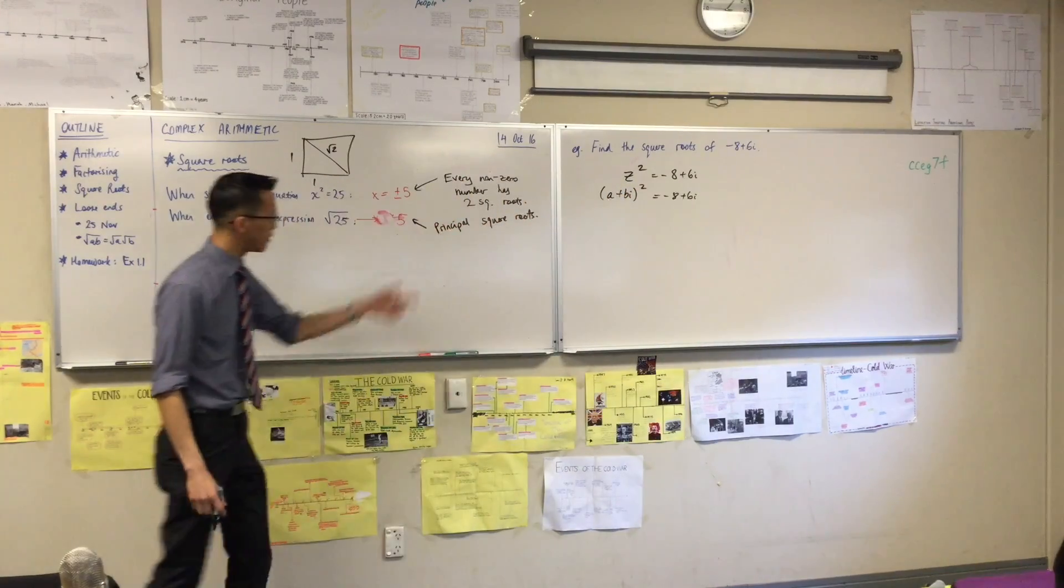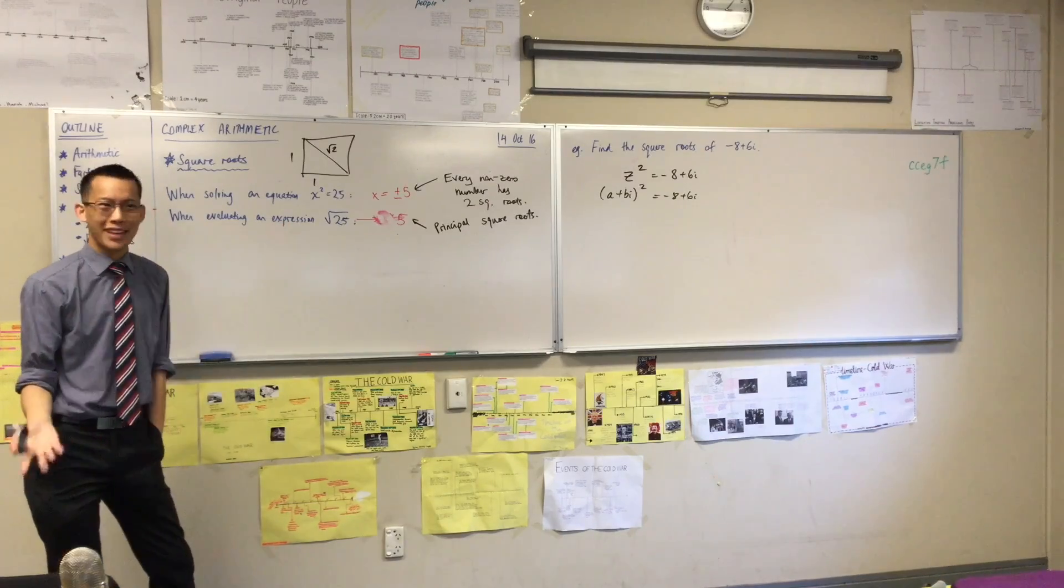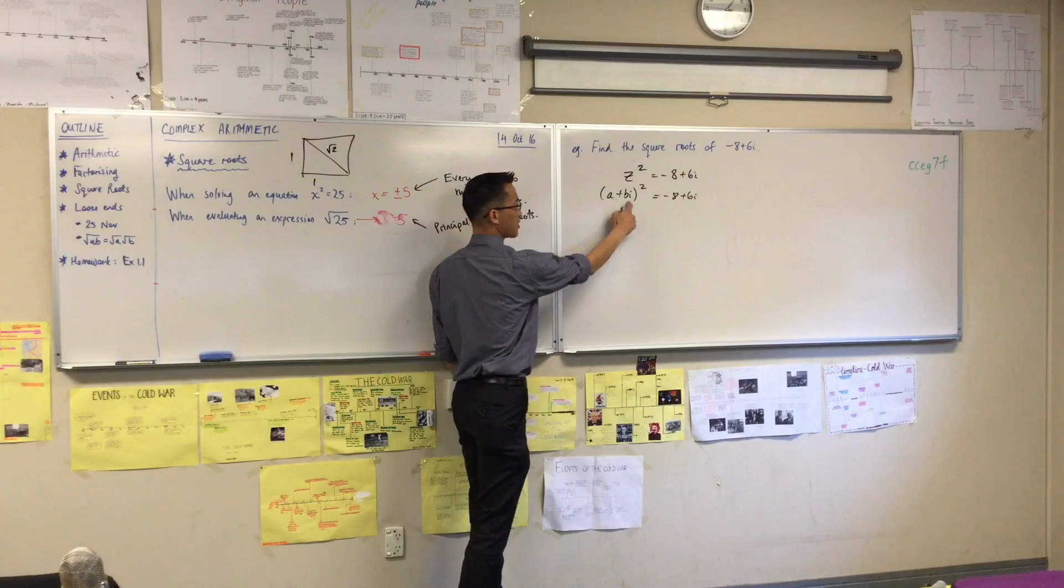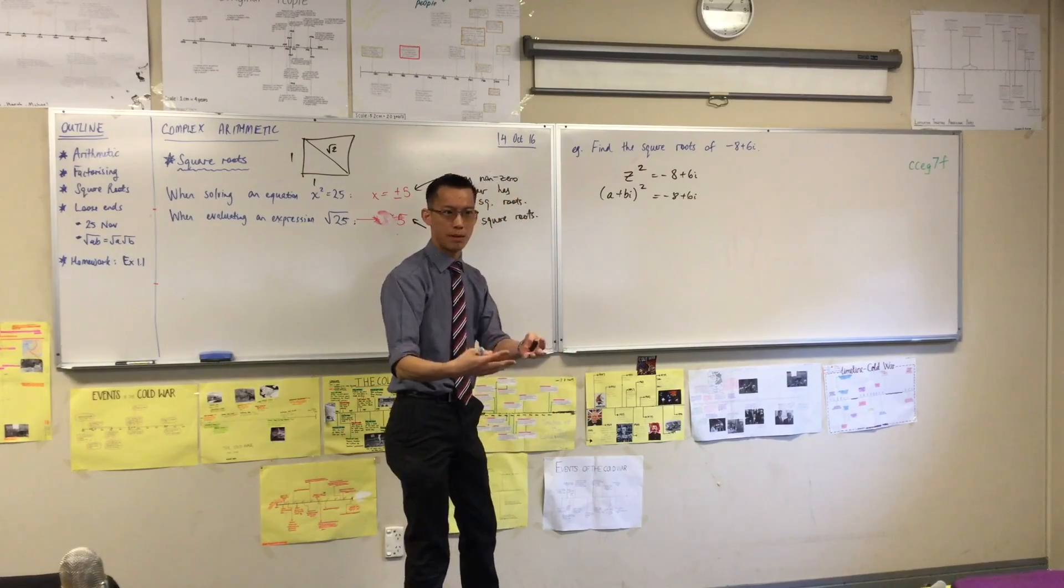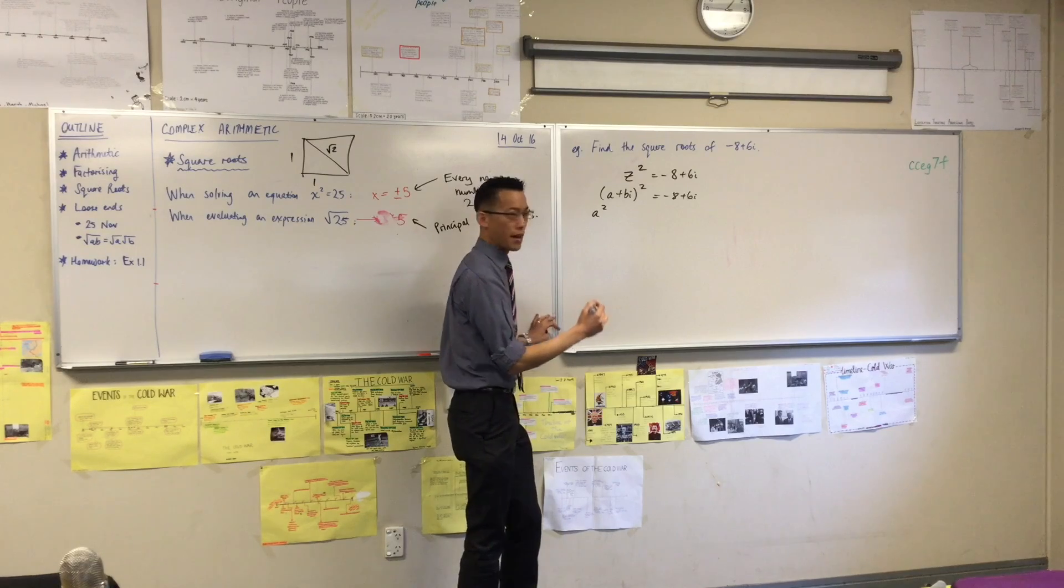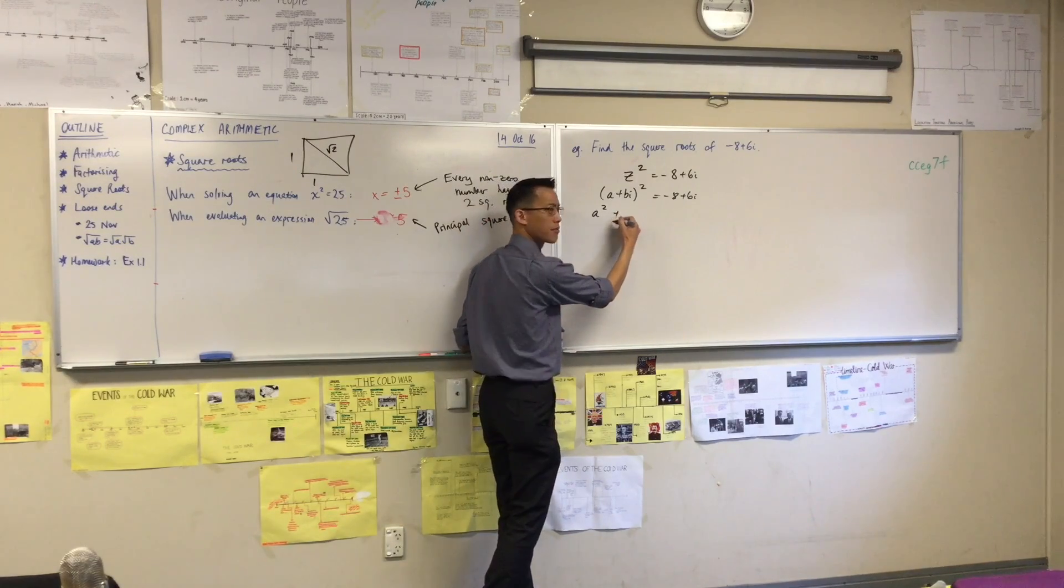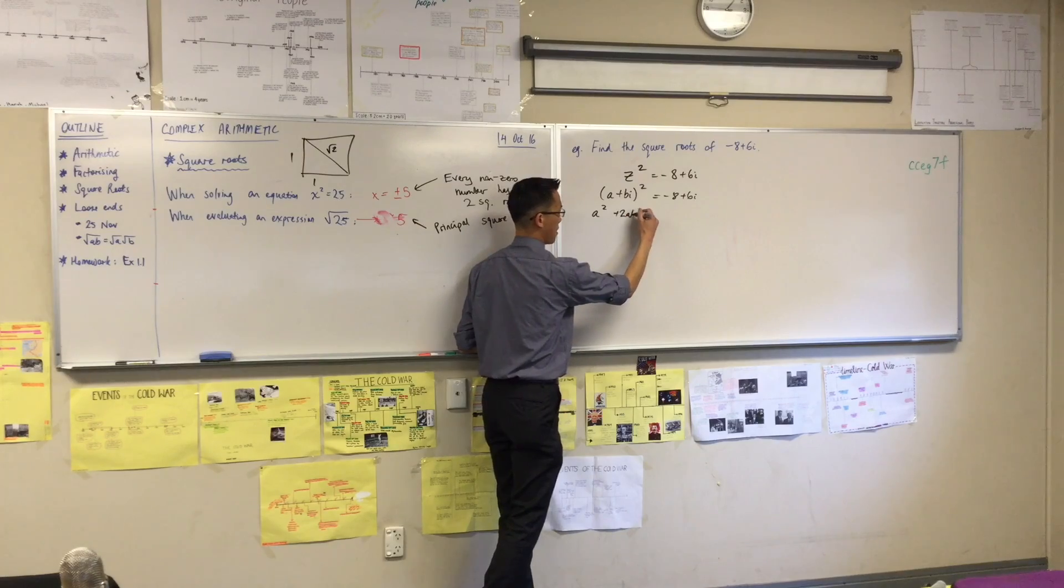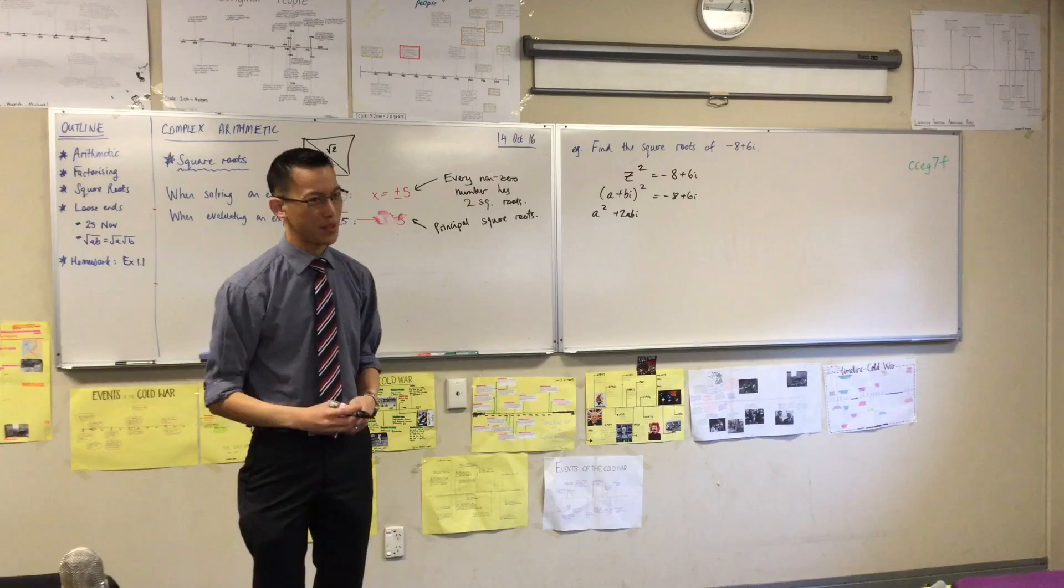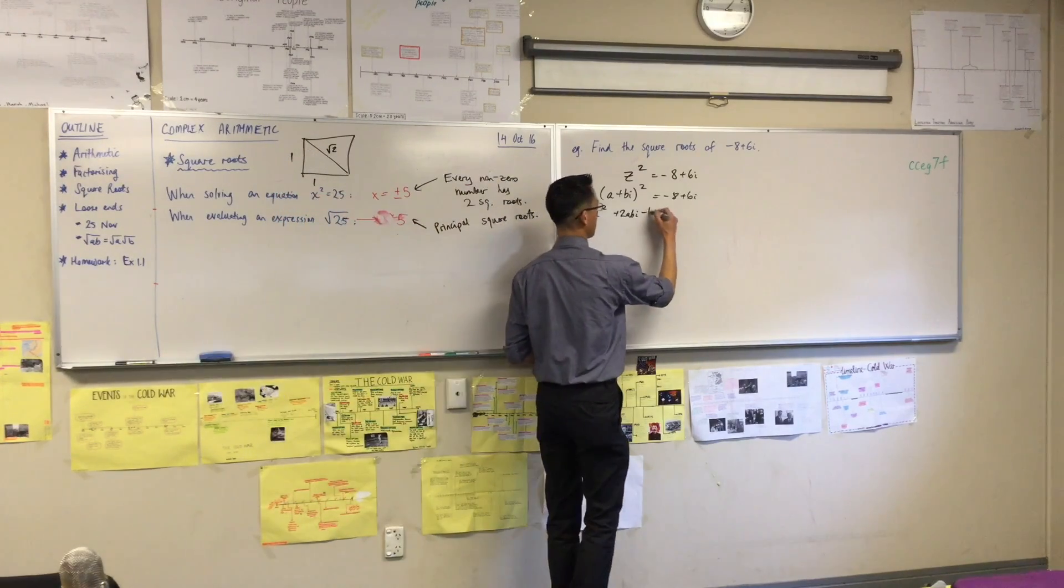Now what's wonderful about this is this has turned this into a problem that I know how to do. That on the left-hand side is a multiplication problem, right? I can do this. So this is going to be this. This is just like a regular a plus b squared, right? So there's going to be an a squared, but there's not going to be 2ab in the middle, is there? What's going to be in the middle? 2abi. And normally, I'd have a plus b squared on the end, but I don't have a plus b squared on the end anymore, do I? I have a minus b squared.